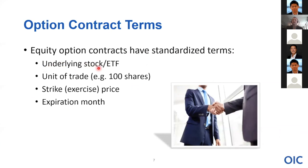The contract terms include: the underlying stock symbol, the unit of trade — which is the deliverable, or how many shares change hands if the buyer or seller needs to execute the transaction, and that's 100 shares for a standard contract. The option will be quoted on a per share basis, so you multiply by 100 to get the total dollar premium amount that changes hands. The strike price will be identified — that's the price at which the buyer has the right to buy or sell shares. And the expiration month will also be identified.